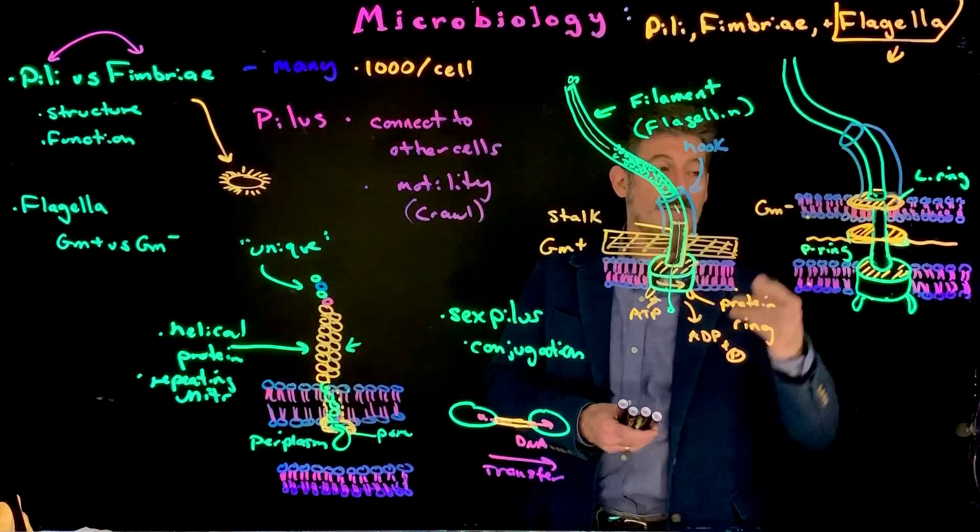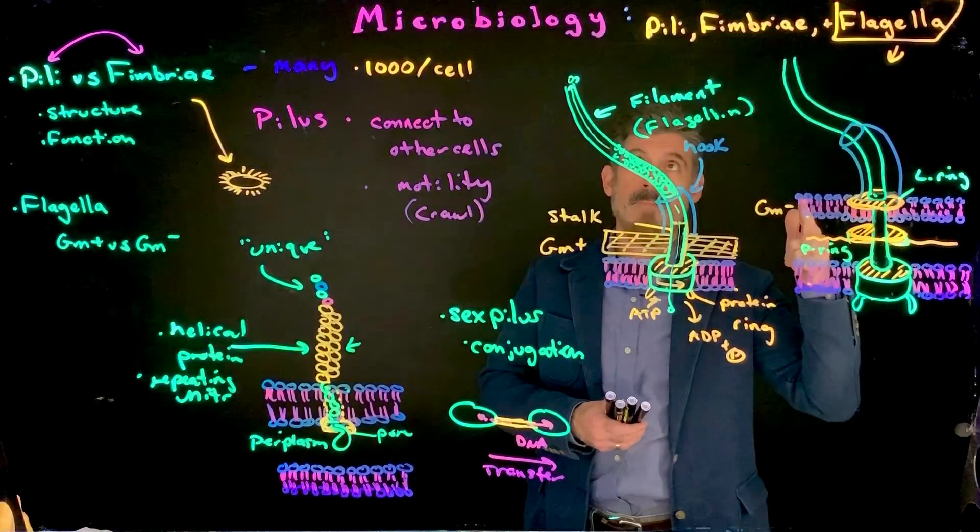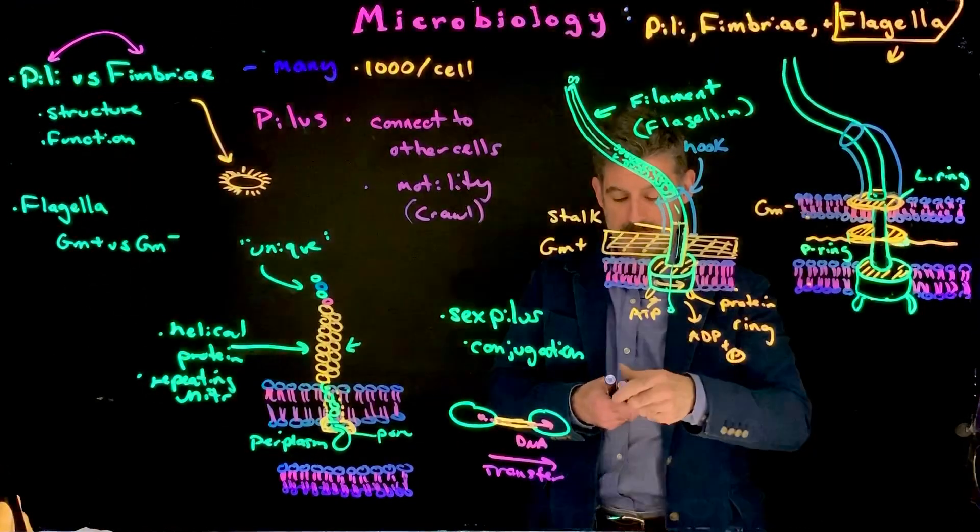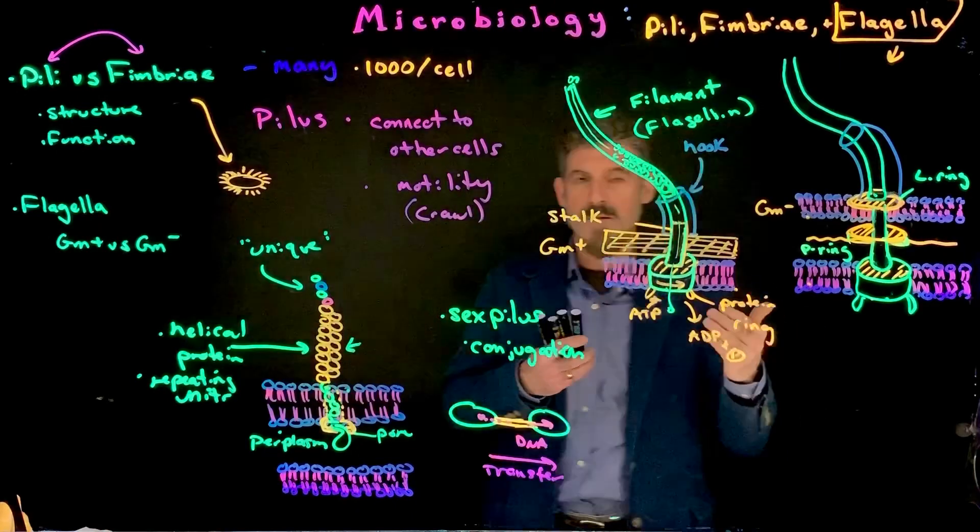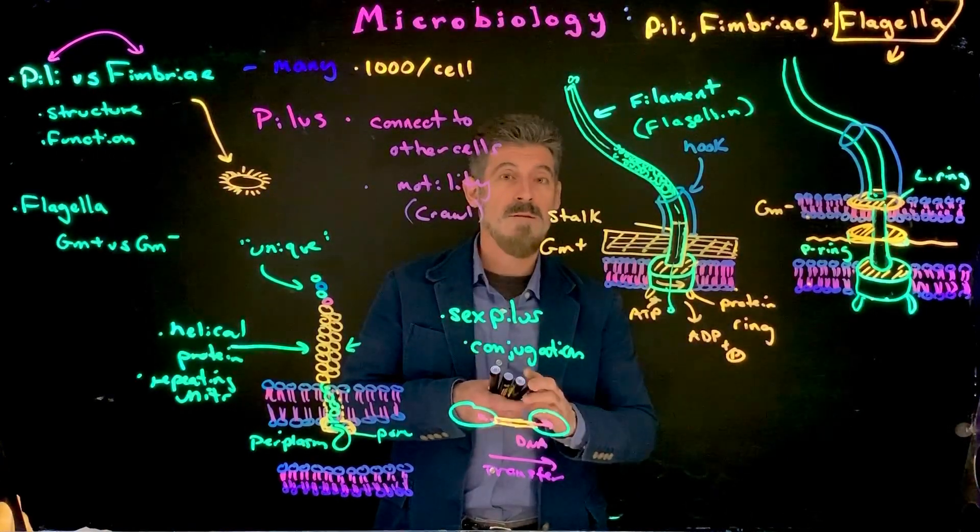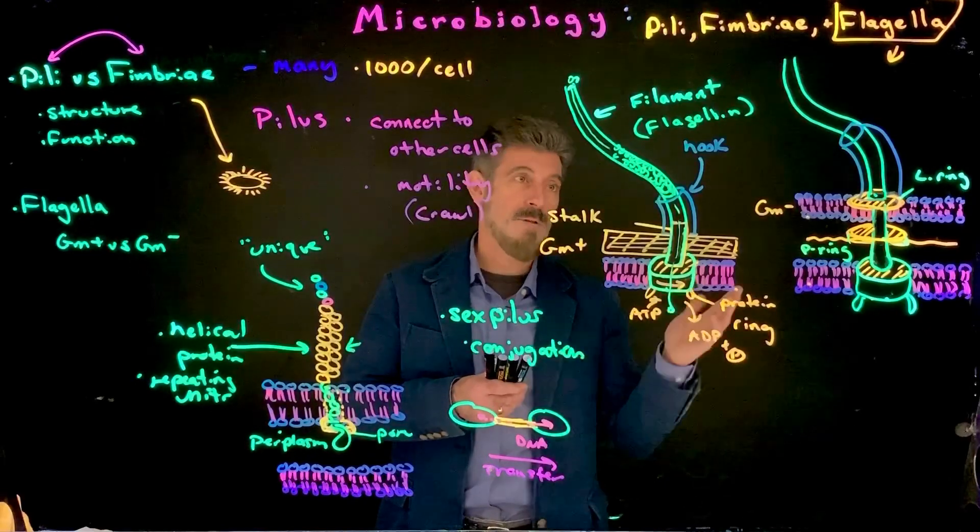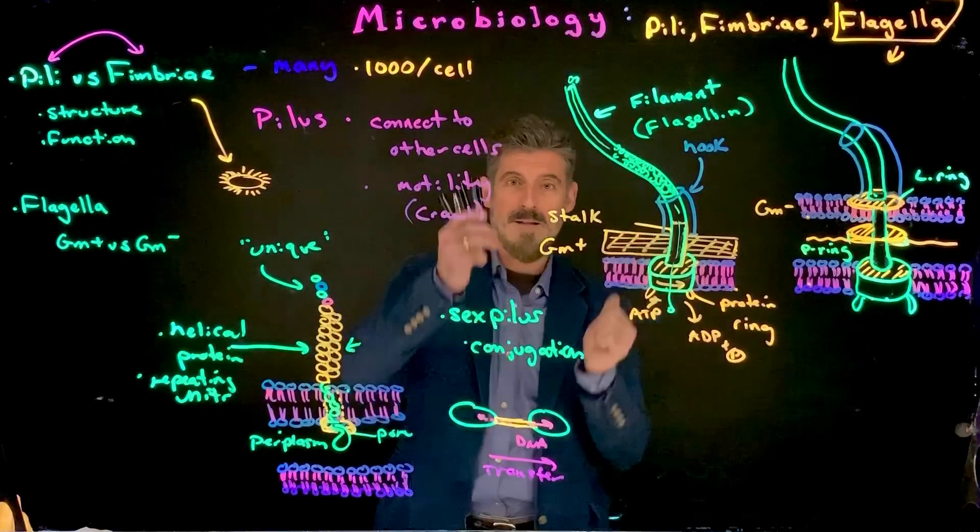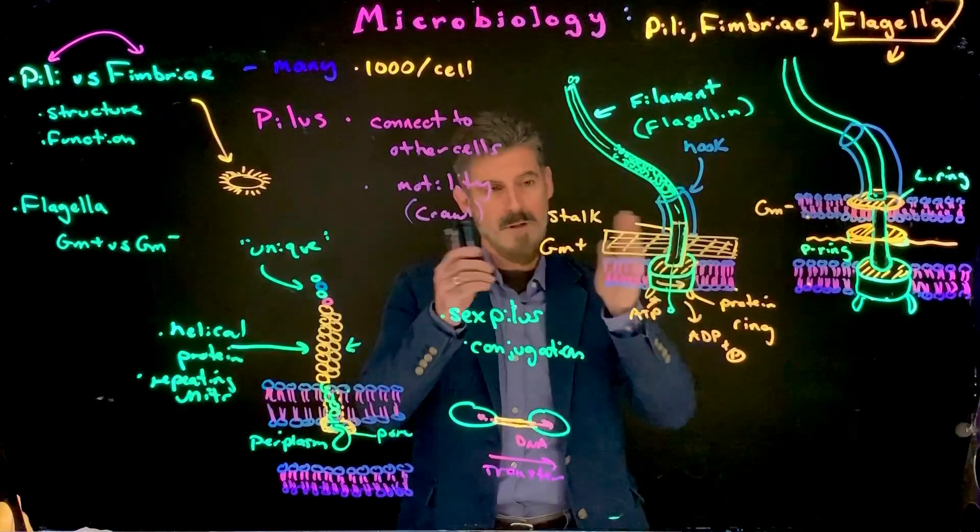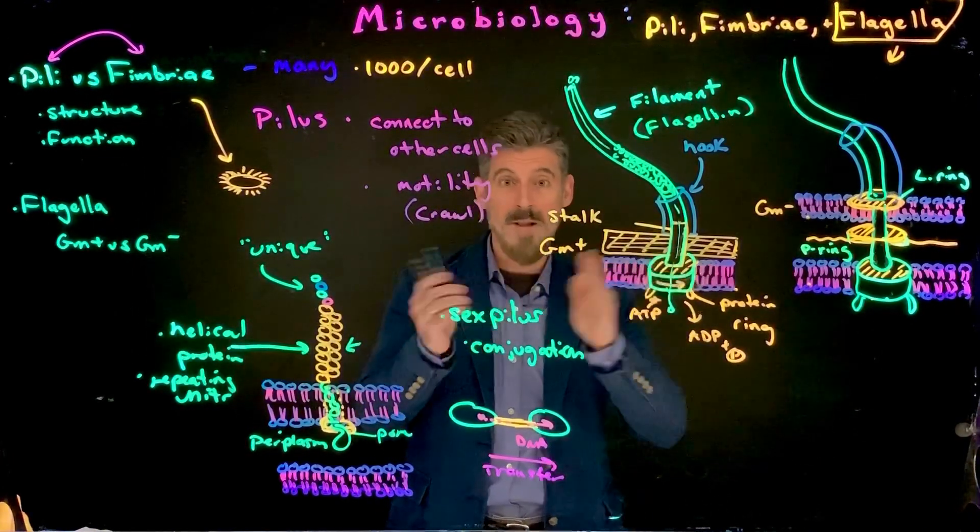So, that's one of the unique things about the overall structure of the bacteria flagella versus, say, the flagella in eukaryotic cells. In eukaryotic cells, it's made of tubulin protein. So, it's a different protein. And it actually kind of shortens on one side and lengthens on the other. And that kind of makes it kind of move back and forth. It's more of a whip-like motion.